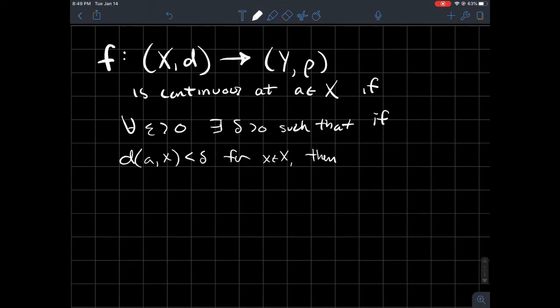Such that if the distance back here in X between a and x is less than delta for x in X, then that should guarantee that the distance between the outputs of a and x over here in Y should be less than this number epsilon. That distance we measure in Y by rho, so rho of f(a), f(x) has to be less than epsilon.